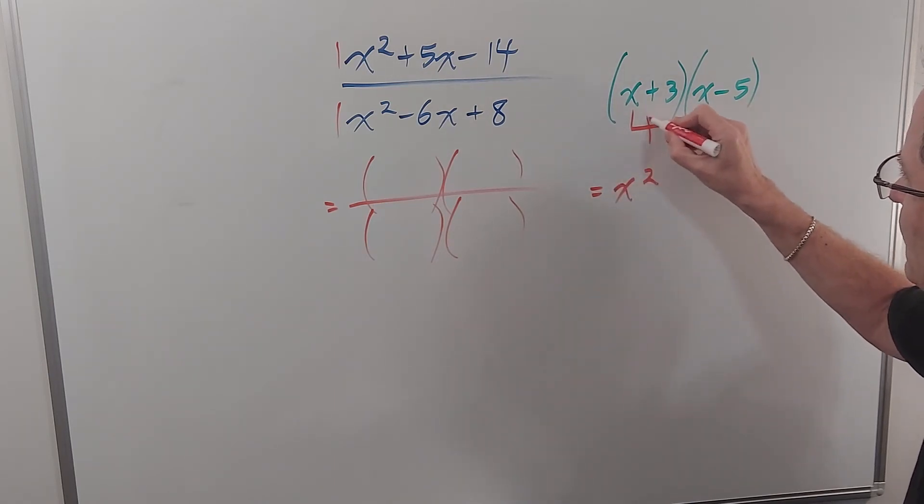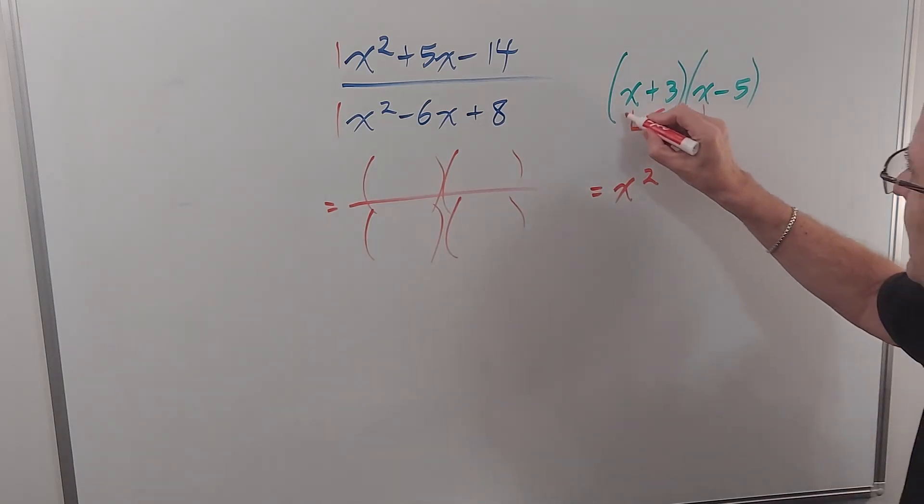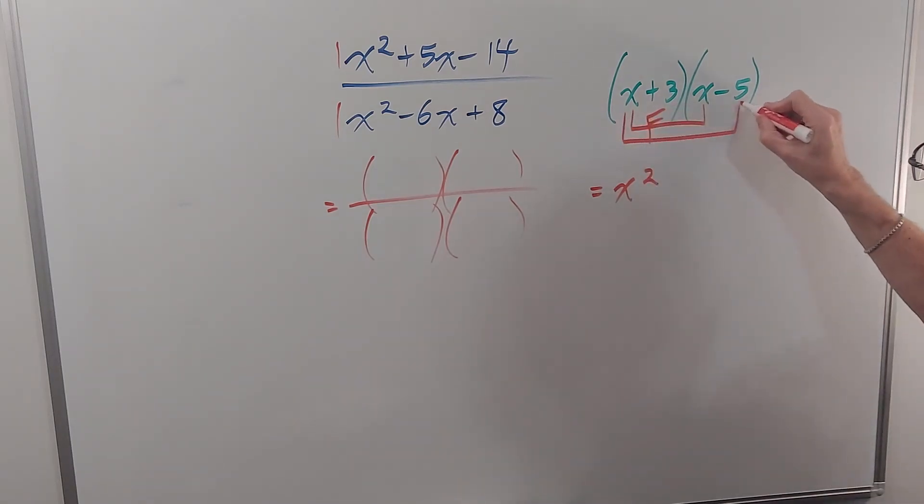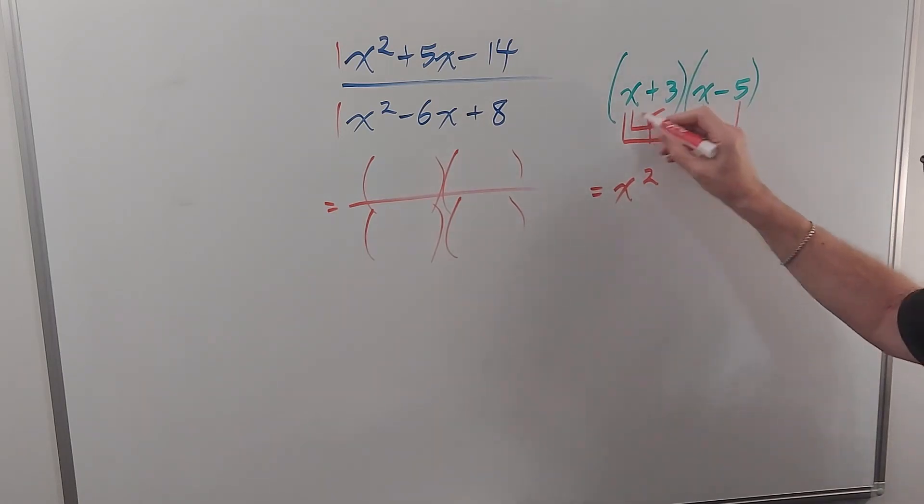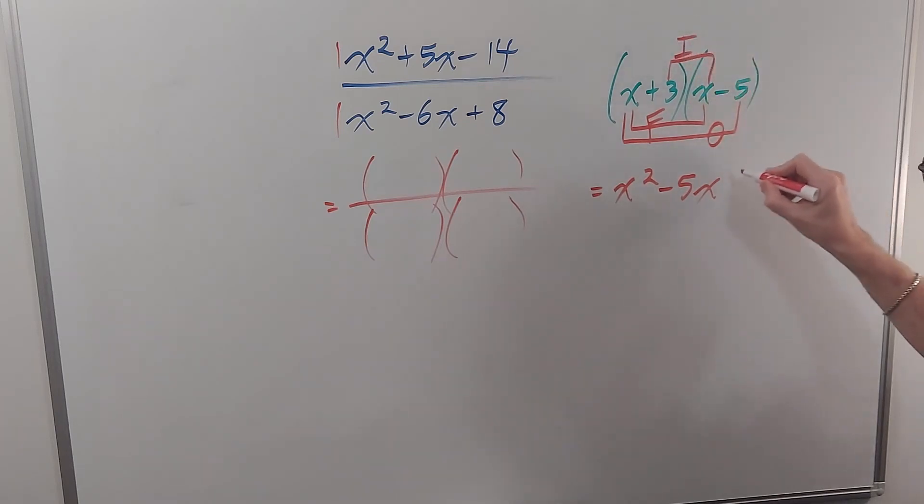Those are the first terms in each bracket. Then we multiply the outer or outside terms. That's O for outside. x times negative five is negative five x. Then the inside two, I for inside. That's three x. And finally the last two. Three times negative five is negative fifteen. The order doesn't matter, but in English we talk about FOIL to remind us the four things we have to multiply.